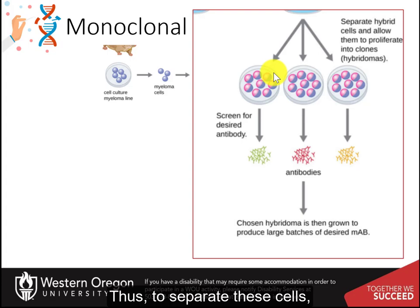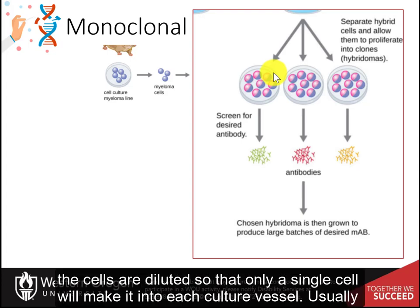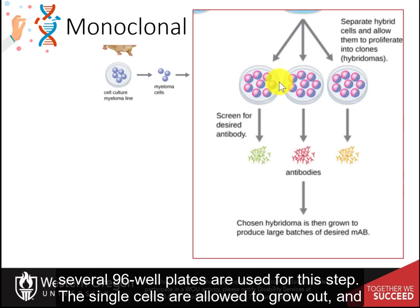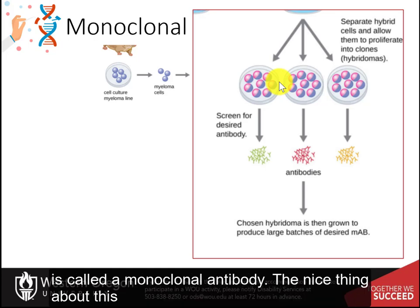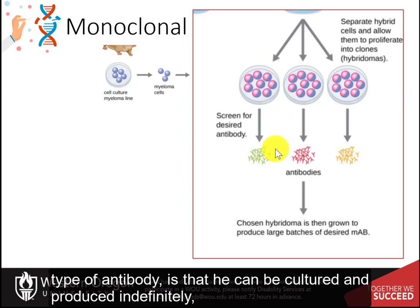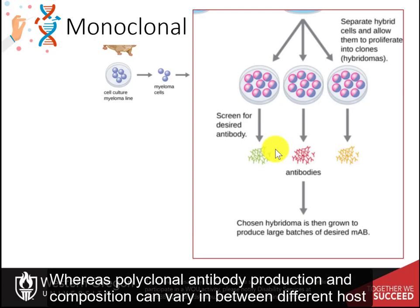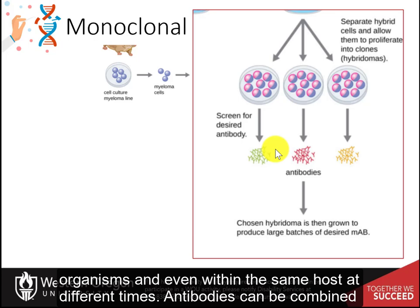To separate these cells, they are diluted so that only a single cell will make it into each cultured vessel. Usually, several 96-well plates are used for this step. The single cells are allowed to grow out, and each will produce only a single antibody with a specific epitope for the protein of interest — this is called a monoclonal antibody. The nice thing about this type of antibody is that it can be cultured and produced indefinitely, whereas polyclonal antibody production and composition can vary between different host organisms and even within the same host at different times.